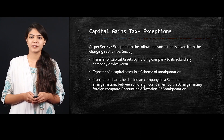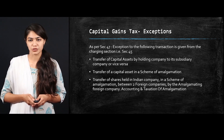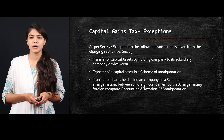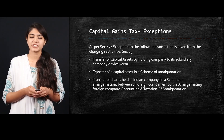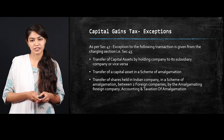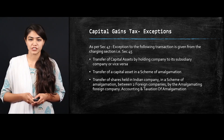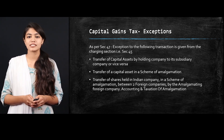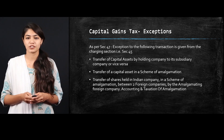Now let us see the capital gain tax exceptions for mergers and acquisitions. As per Section 47, exceptions to the following transactions are given from the charging section, that is Section 45: transfer of capital assets by a holding company to its subsidiary company or vice versa; transfer of a capital asset in a scheme of amalgamation; and transfer of shares held in Indian companies in a scheme of amalgamation between two foreign companies by the amalgamating foreign company.